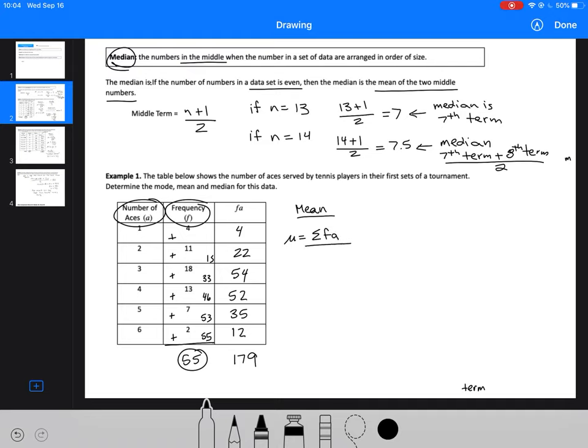Mu is going to be equal to the sum of our data values divided by the total number of data values that we have. We found those two already: 179 divided by 55. So we're going to get that mu is approximately 3.25.